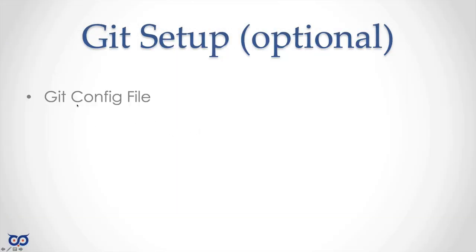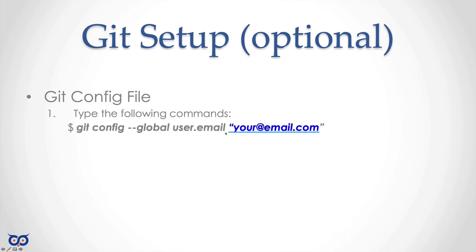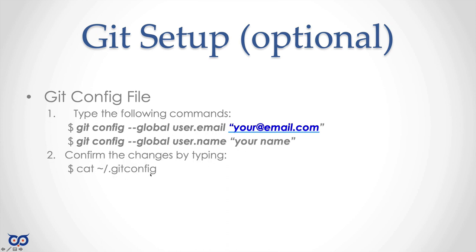If you installed Git, it needs a config file telling it your name and email address. Run the two git config commands to set both. You can confirm it created the config file for you. That's all you need for Git configuration. We didn't have a whole lot to set up but I did a lot of explanation, so it made it very long. The next lecture is lecture 1 of section 2, where we actually get our hands dirty and start writing Go code. Good luck!